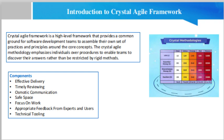Who is the person who invented the Crystal Agile Framework? Alistair Cockburn is known to have developed the Crystal Agile Framework for IBM in the early 1990s. He encouraged team collaboration and communication guidelines instead of step-by-step development strategies.